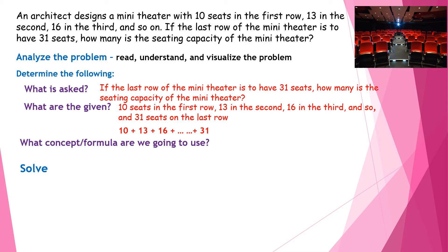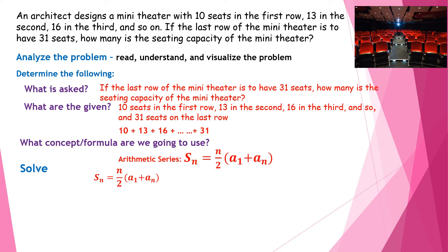Since we are given the first term and the last term, we'll use arithmetic series with the formula s sub n equals n over 2 times a sub 1 plus a sub n. We identify: a sub 1 is 10, a sub n is 31, and n equals 8 — which you can find by counting the terms 10, 13, 16, 19, 22, 25, 28, 31, or by solving for the position of 31 in the arithmetic sequence.